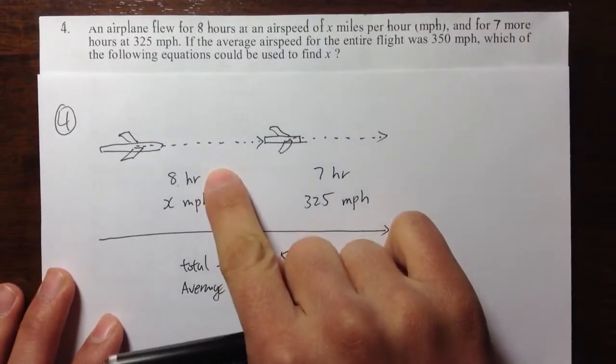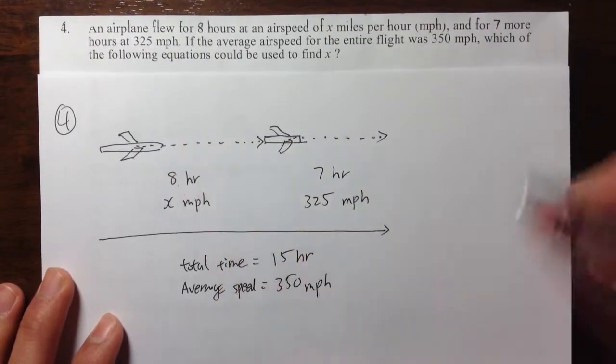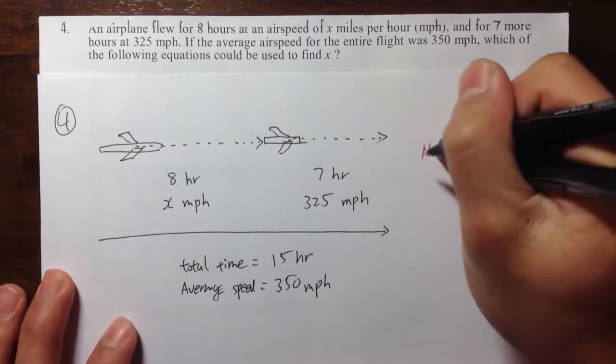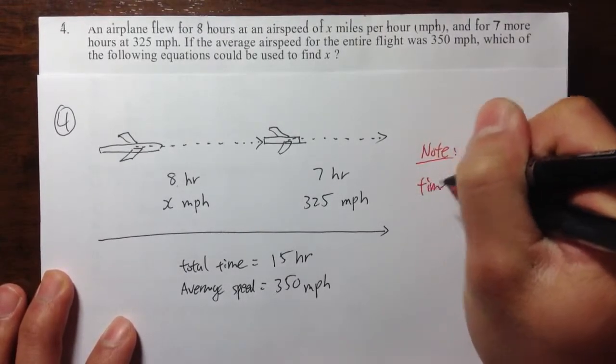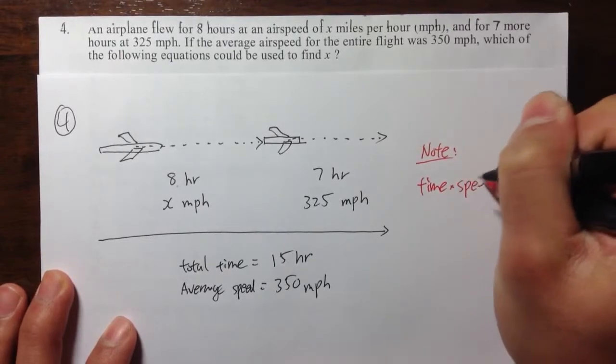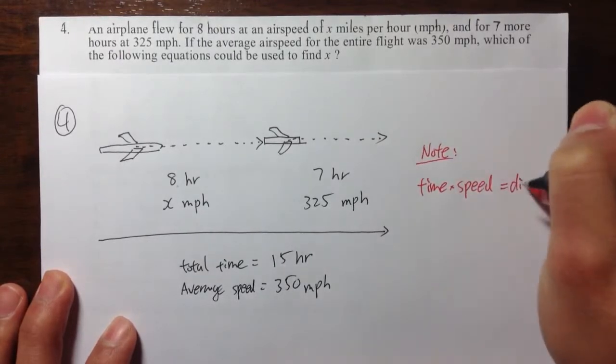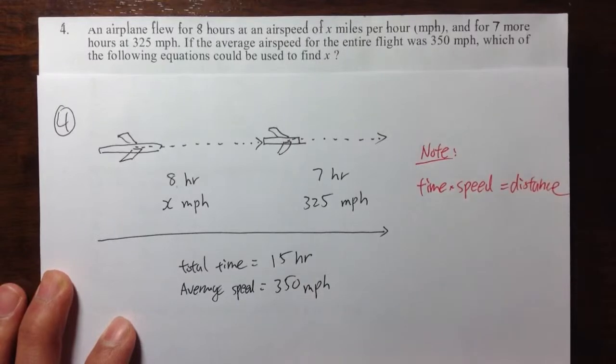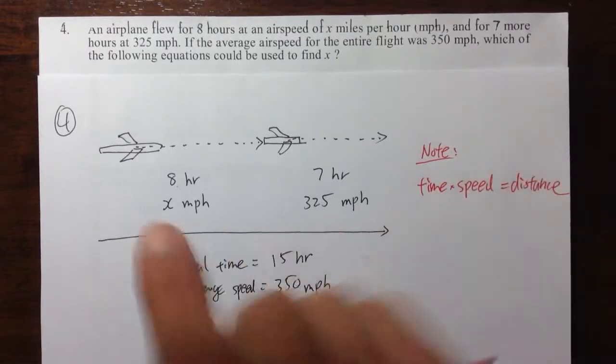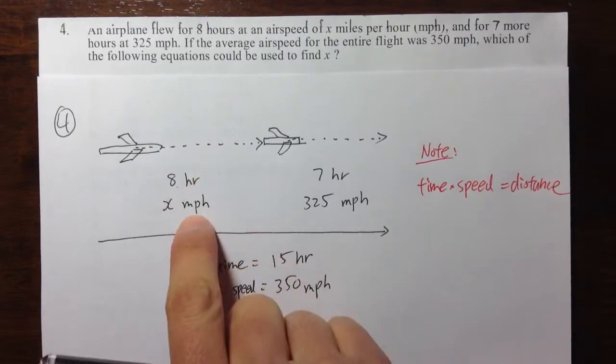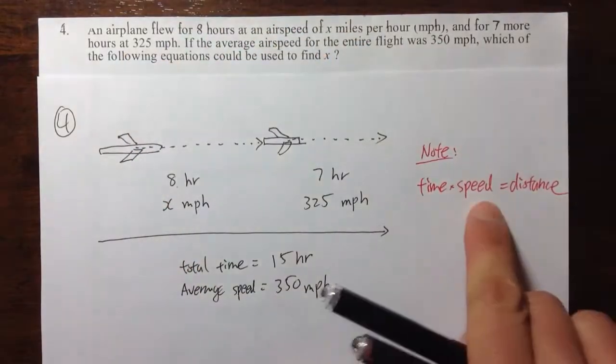So we have speed, we have time. We must use one of the formulas that we know. Note, if we have time times the speed, this will give us the distance. Because that's one thing that they didn't mention in the question. But if we have the time and the speed, if we multiply time and speed together...